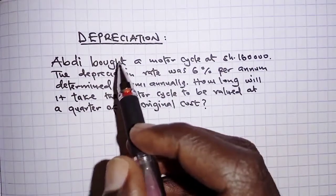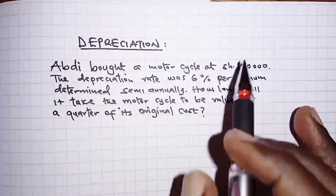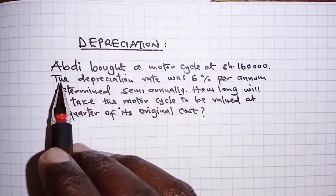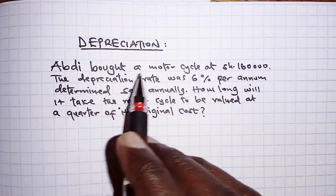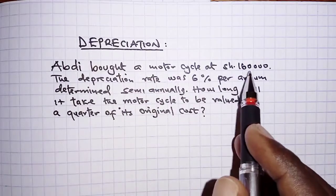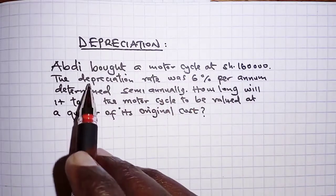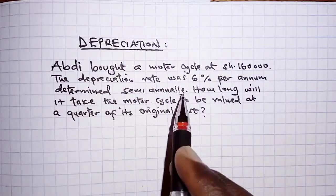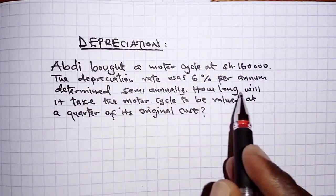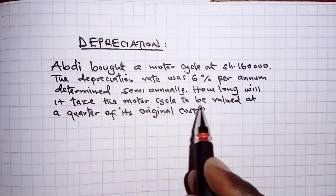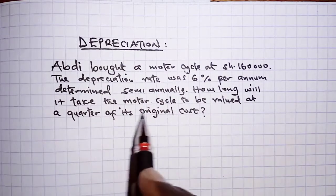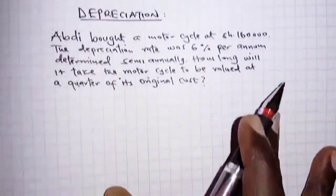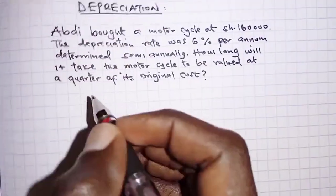Hello, welcome to this video. In today's presentation we have a question on depreciation. The question reads: Abdi bought a motorcycle at 160,000 shillings. The depreciation rate was six percent per annum, determined semi-annually. How long will it take the motorcycle to be valued at a quarter of its original cost?